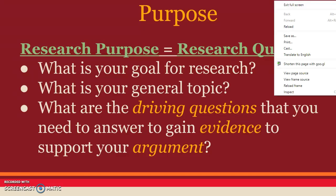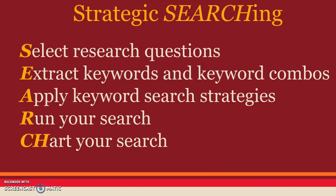Once you have your initial questions, you then need to identify the associated search keywords that will help you locate information to answer these questions. The letters of the word SEARCH help you remember the five steps of successful strategic searching. The first step is S – select research questions. Next is E – extract keywords and keyword combinations from these research questions. That is, identify the main words from your questions that describe the information you need. Third is A –